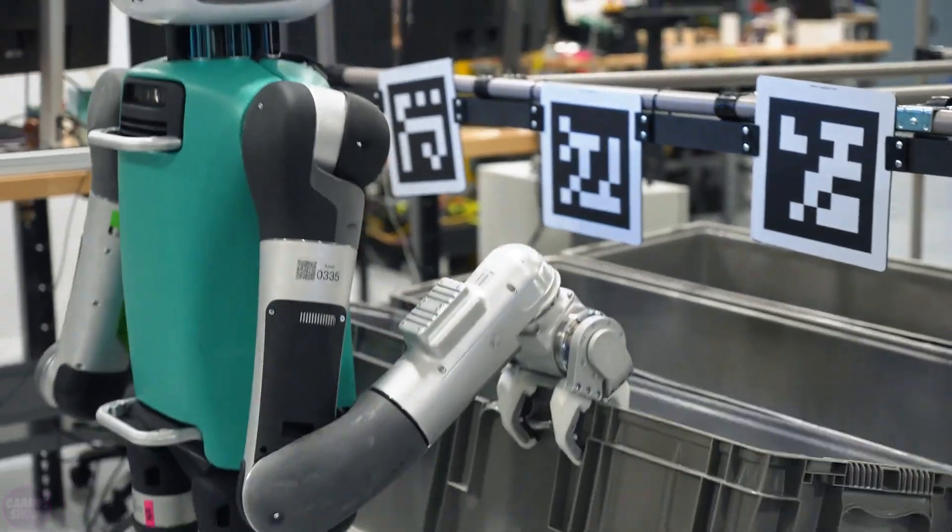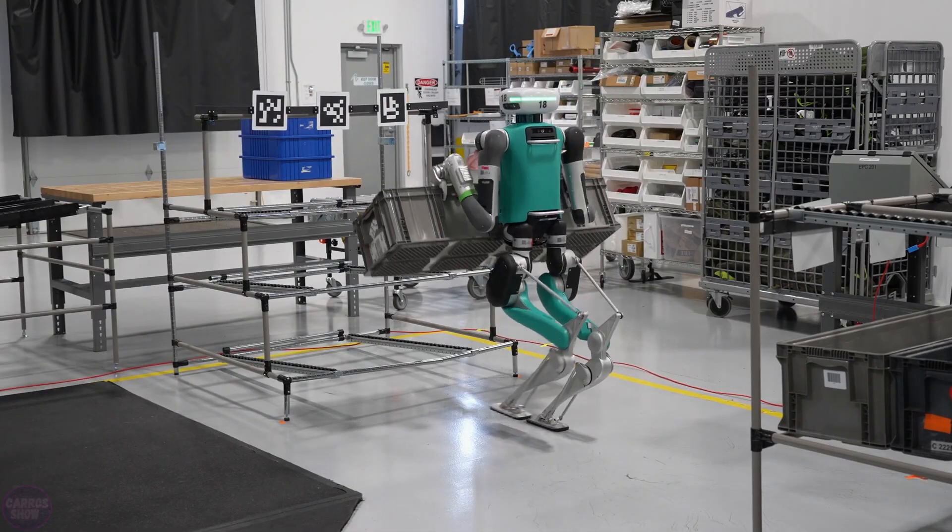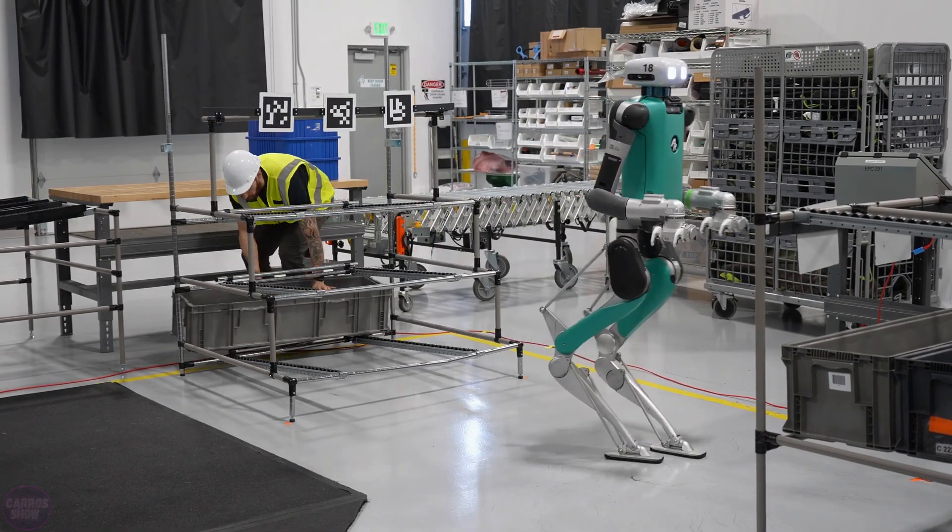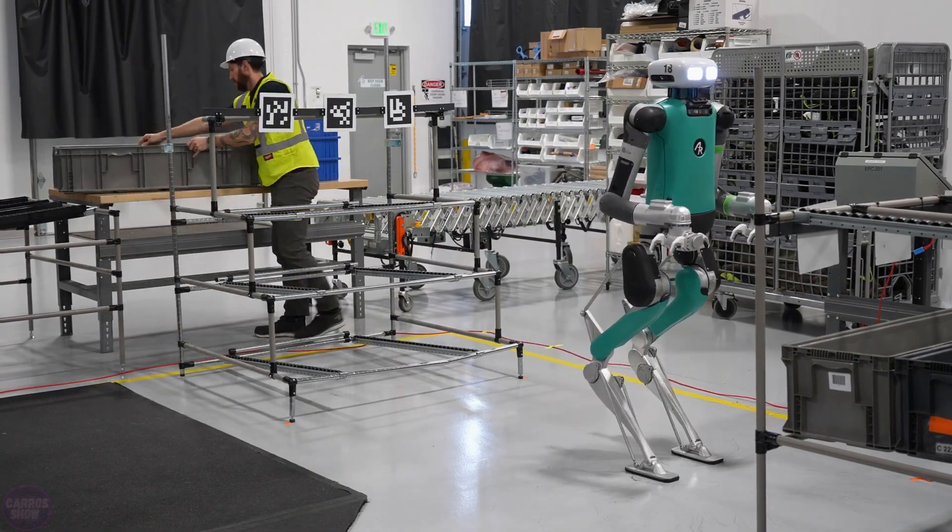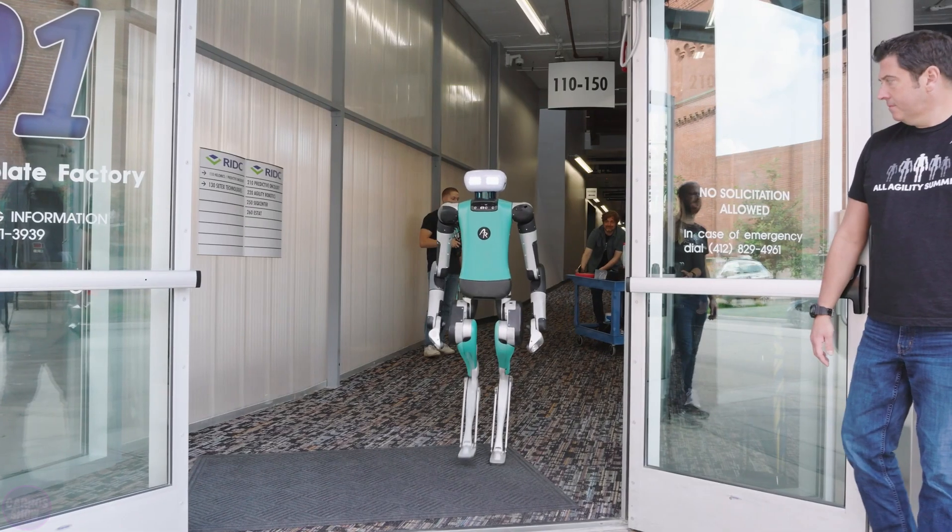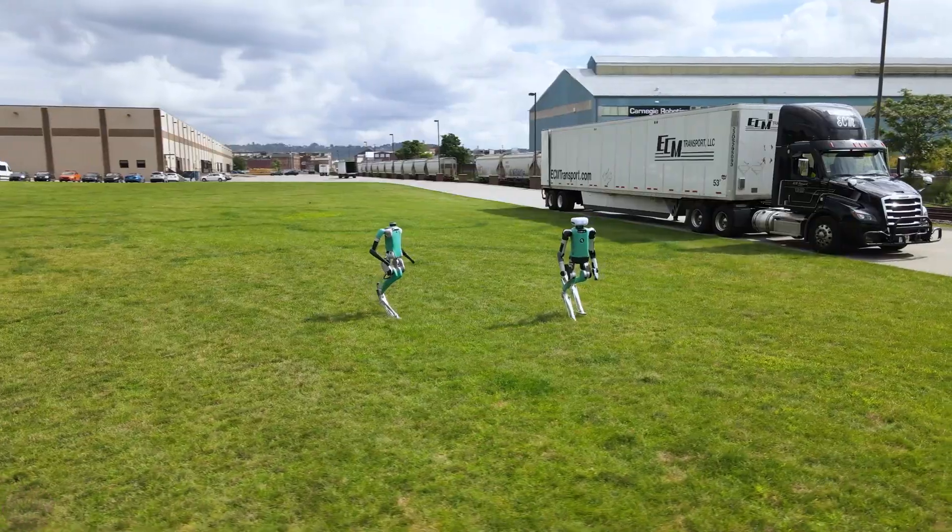Digit itself is an advanced version of the previous model named CASI and is equipped with both legs and arms, significantly expanding its functionality. The robot stands 1.75 meters tall and is capable of carrying boxes weighing up to 18 kilograms, climbing stairs, traversing uneven surfaces, and performing various tasks in warehouses and logistics centers.